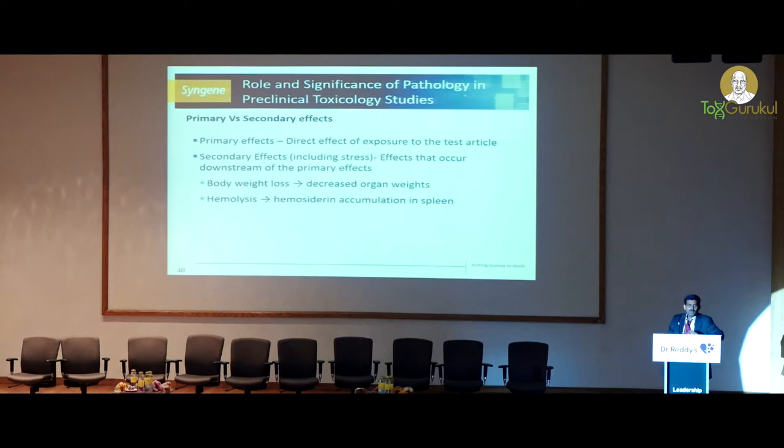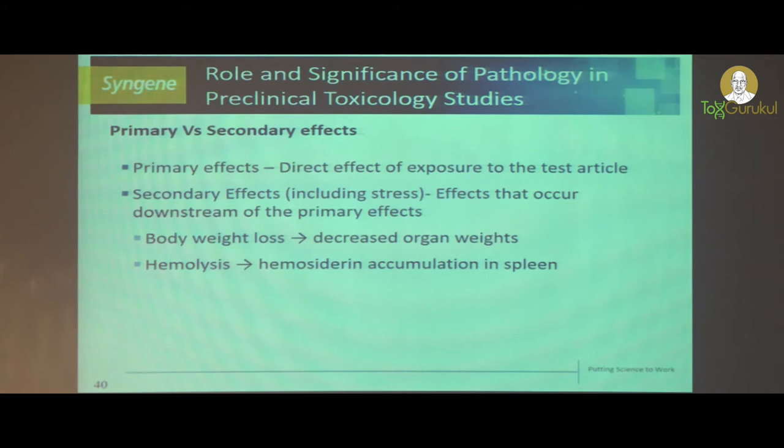Thyroid findings in rats: thyroid hormones are very tightly regulated in rats, and there is a difference in thyroid binding globulin. Primary findings are those directly caused by the test item, while secondary findings are downstream of the primary findings. For example, decreased body weight results in decreased organ weight, which is reflected histologically as well, especially in lymphoid organs. Only the body weight loss is considered the primary finding; all downstream effects are secondary and not generally considered for adversity definition.